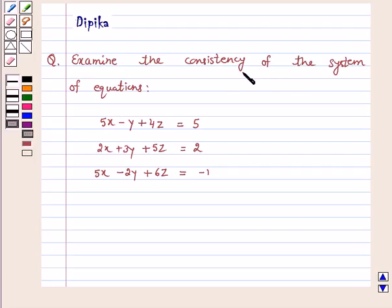Examine the consistency of the system of equations: 5x minus y plus 4z equals 5, 2x plus 3y plus 5z equals 2, 5x minus 2y plus 6z equals minus 1.